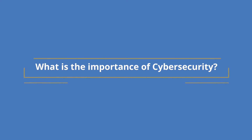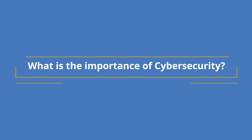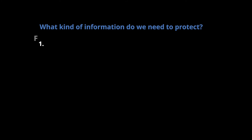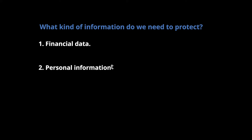With an understanding of cybersecurity, let us now explore its importance. The main aim of cybersecurity is to secure the information. But what kind of information needs securing? We are looking at information such as financial data. This includes things like fee payments, banking details, as well as payroll information. We also have personal information, which includes employment history, residential addresses, contact information, as well as health information.